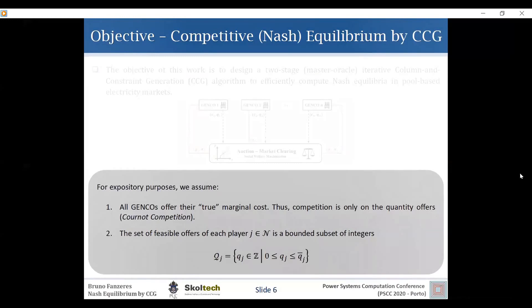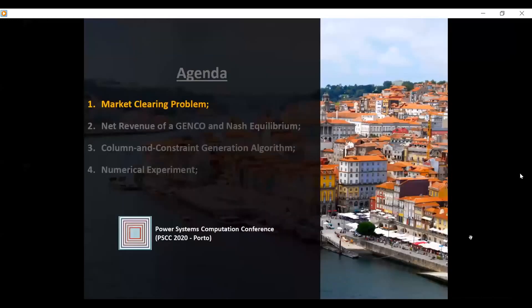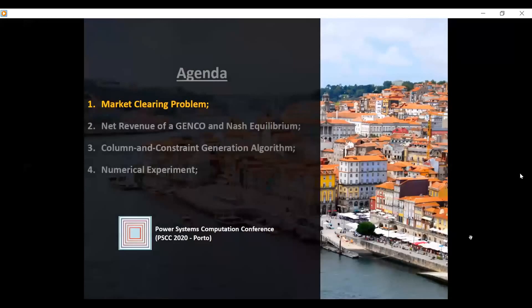And also that the set of feasible quantity offers of each player is this bounded set of the integers. So the outline of this top is divided into these four topics. I will begin by presenting the market clearing problem. Then I will present the net revenue, how we can construct the net revenue of each channel and discuss a Nash equilibrium, the idea of Nash equilibrium in this context. Then I will present the procedure that we are proposing to identify a Nash equilibrium point and show some numerical experiments, computational numerical experiments.